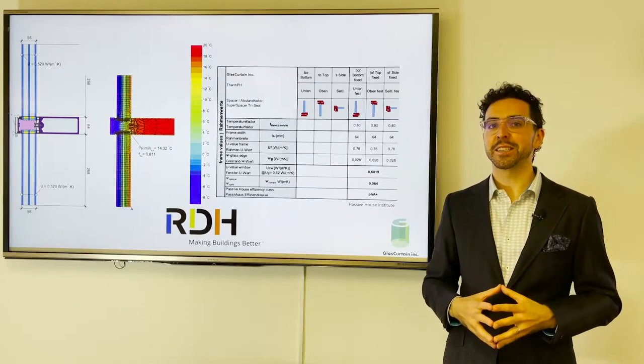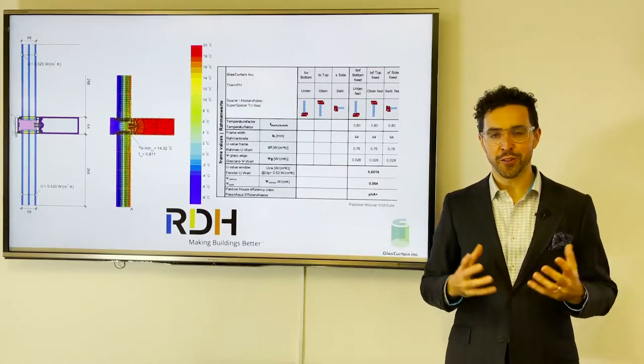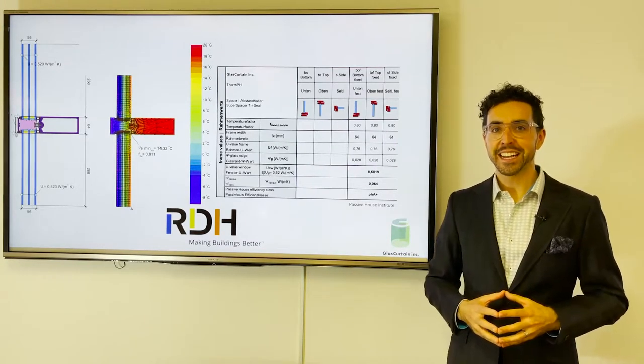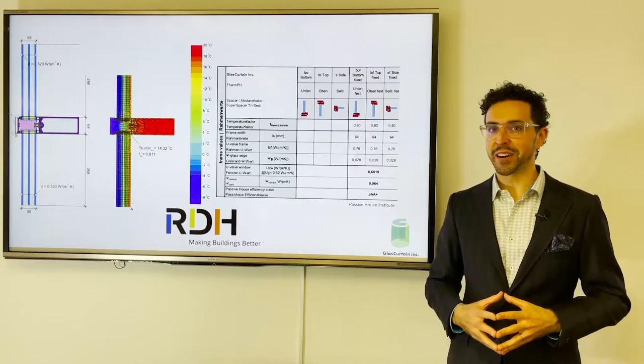And in the next 12 to 18 months, we will see this Therm pH Plus system, this certified cold climate system, be used here in Canada and probably around the world before we know it.